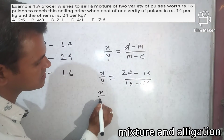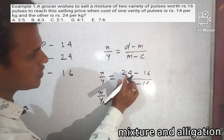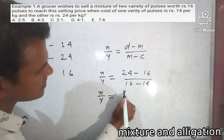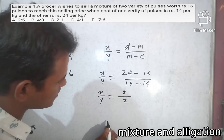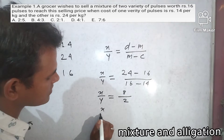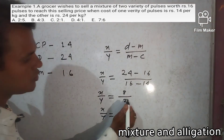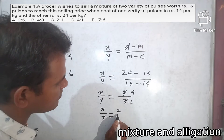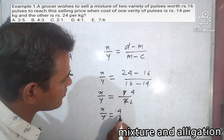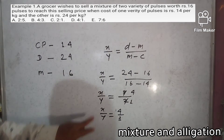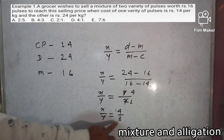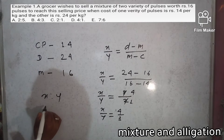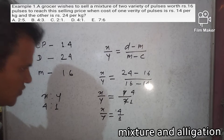So x by y is equal to (24 minus 16) which is 8, and (16 minus 14) which is 2. That gives us 8 by 2. Simplifying: 4 by 1. So x ratio y is equal to 4 is to 1.